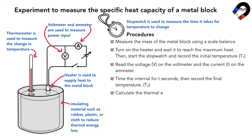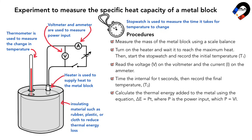Fifth, calculate the thermal energy added to the metal using the equation ΔE = P × t, where P is the power input and P = voltage V times current I. Therefore, c = ΔE / (mΔT). Substituting, ΔE = VIt and ΔT = T2 − T1.